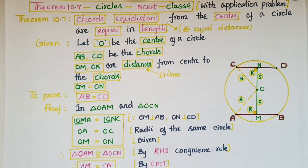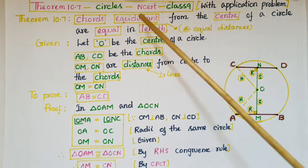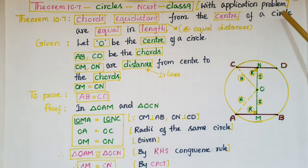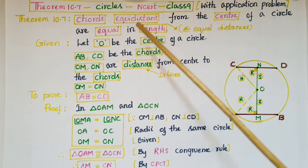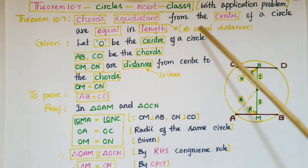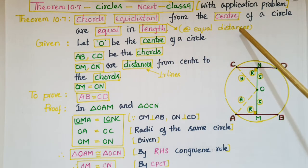Hello everyone. Today I am going to tell the proof of Theorem 10.7 from the Circles chapter from NCERT Class 9. The theorem states: chords equidistant from the center of a circle are equal in length. Here, equidistant means at equal distances.